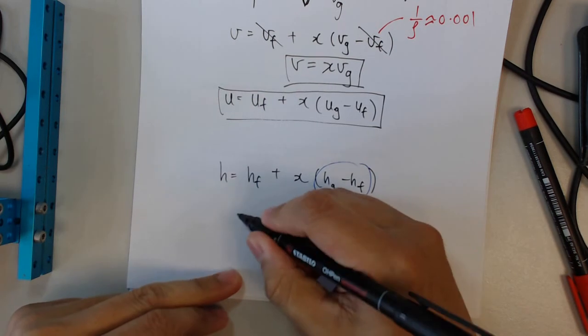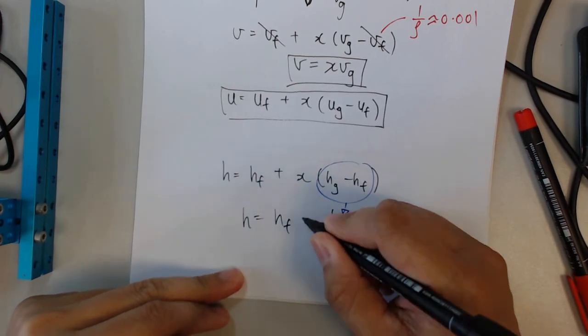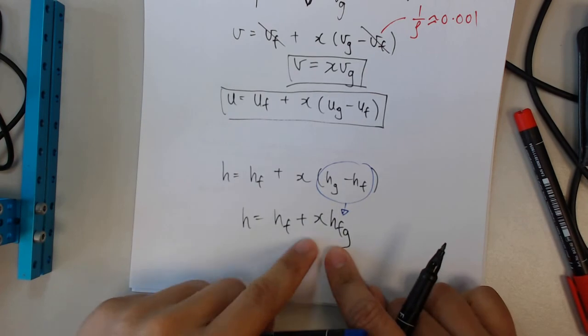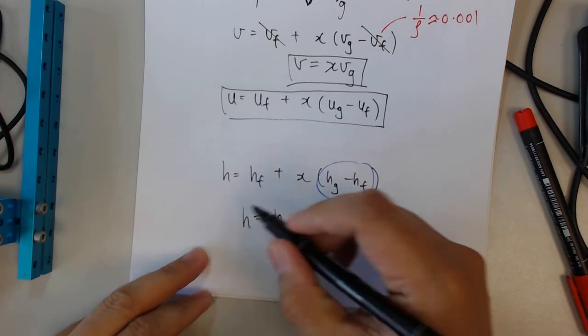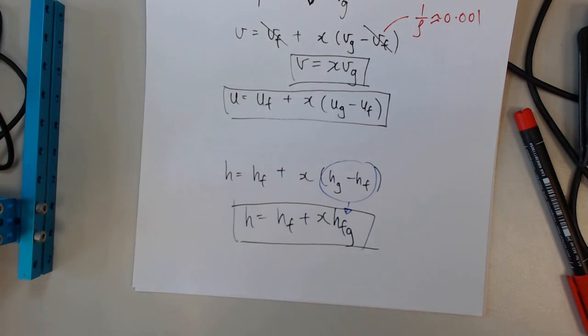So your equation can be simplified to be H equals to Hf plus X Hfg. Okay, so this will be the equation that you can use with your steam tables.